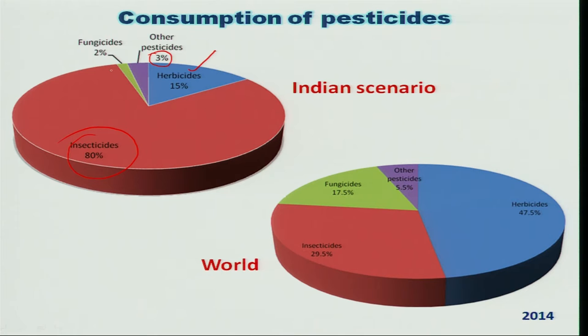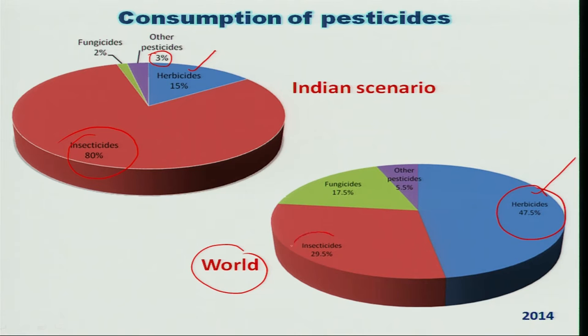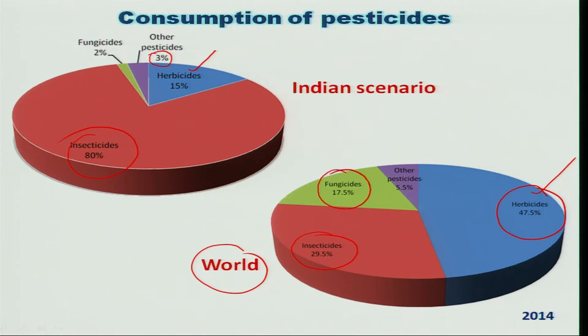If you compare this with world consumption of pesticides, it is altogether different. Across the world, it is herbicides which dominate consumption — almost 47.5% — followed by insecticides at around 29.5%, then fungicides, and then the rest of the other pesticides.